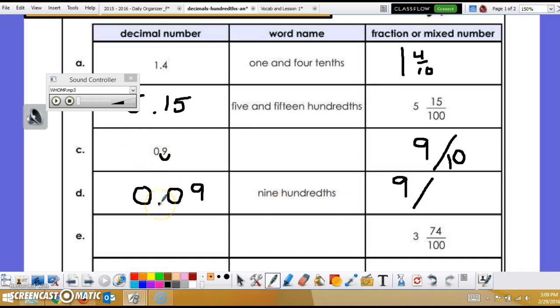Well, how do I know how many it's going to be over? Remember, I whomp however many times it takes me to get to the right of this number. In other words, whomp, whomp. That's twice. Let's listen to it again. Whomp, whomp. Because I whomped twice, that means I have one hundred as a denominator.